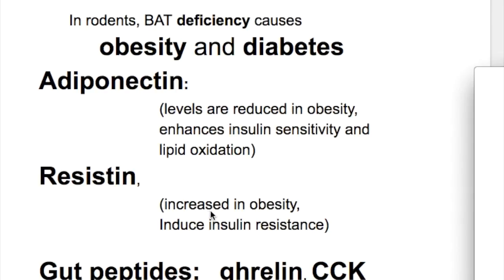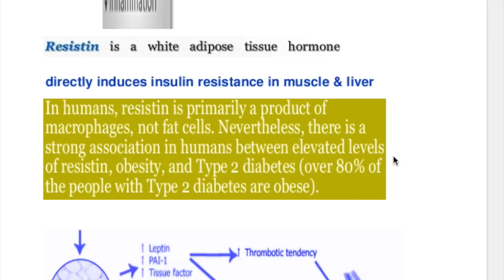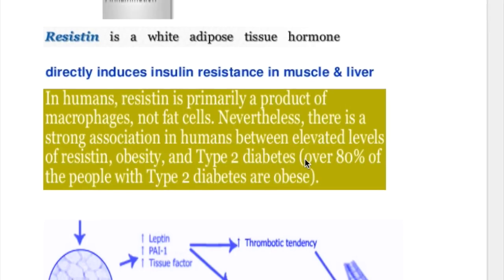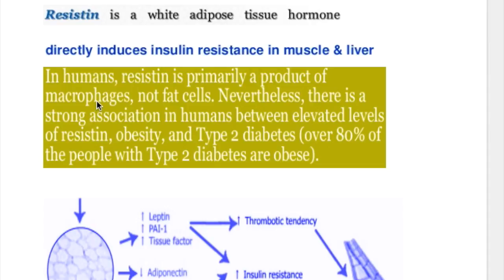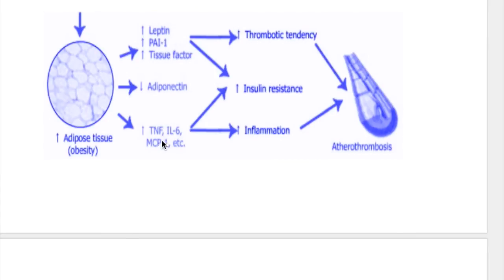The third hormone is resistin, which is increased in obesity. Resistin is a white adipose tissue hormone that directly induces insulin resistance in muscle and liver. It is also a product of macrophages, which are increased in severe obesity.